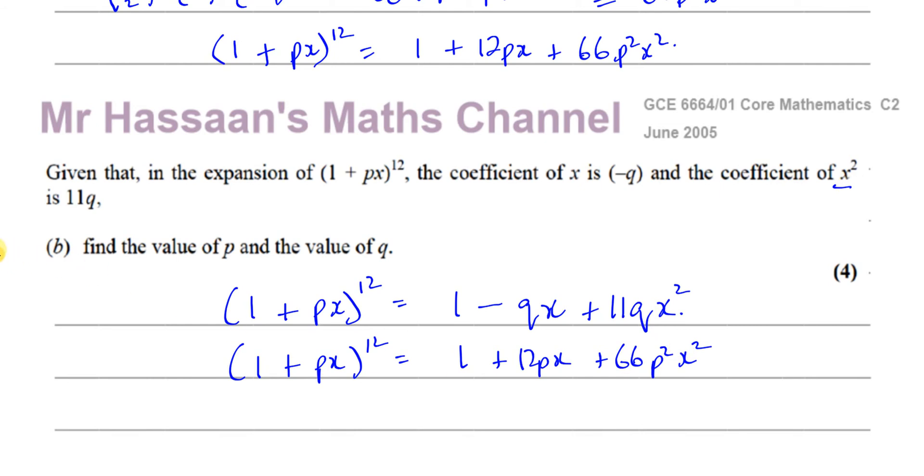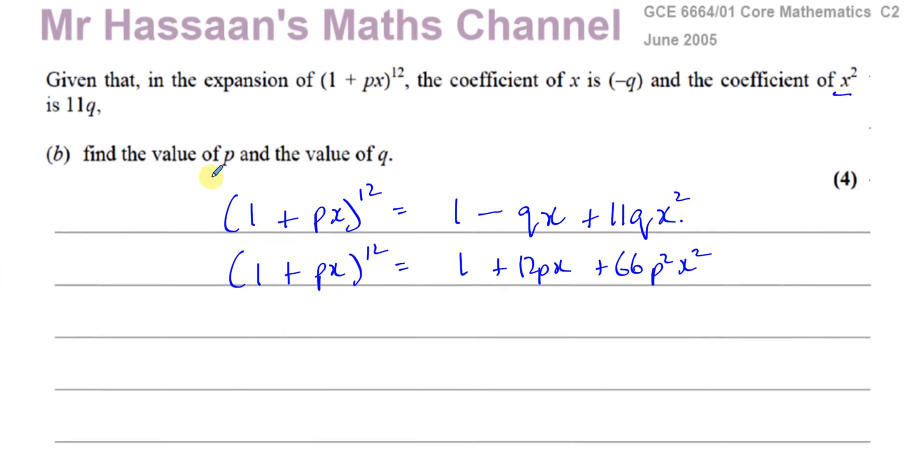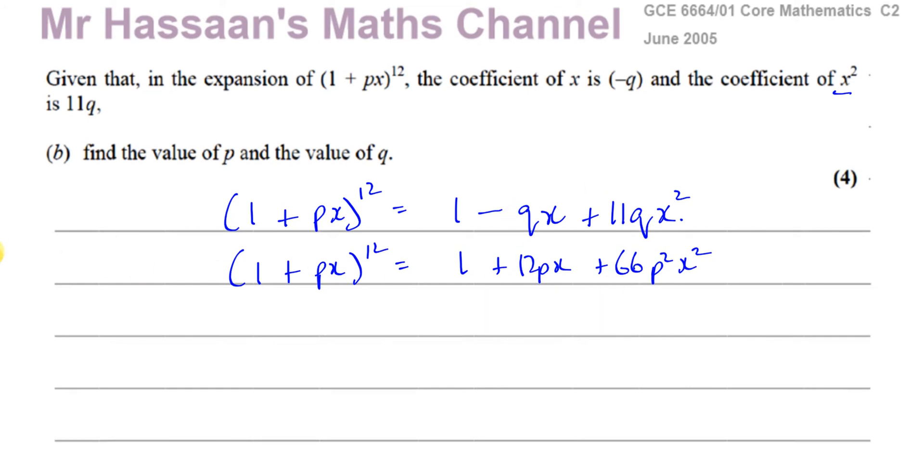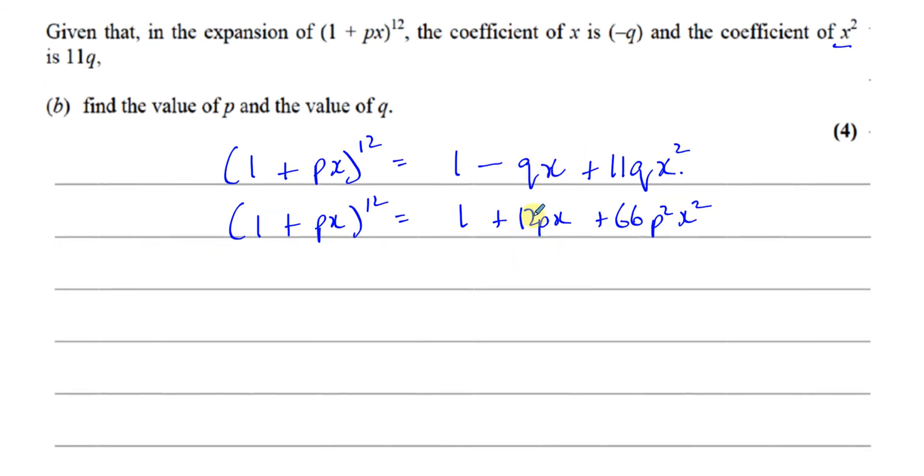So we can compare these coefficients and get two different equations for P and Q. So if I compare the X coefficients, I can see I have minus Q must be the same as 12P, because these are equal to each other.